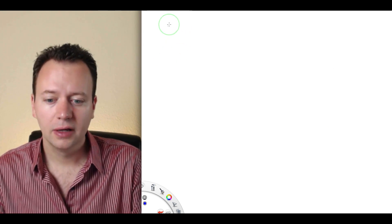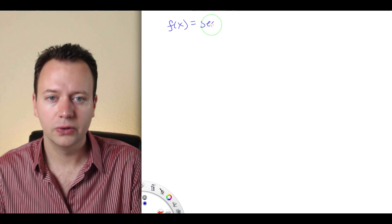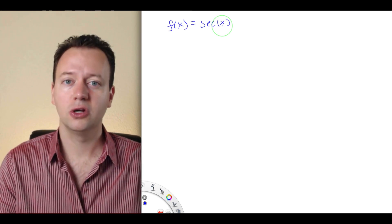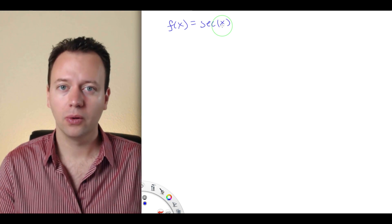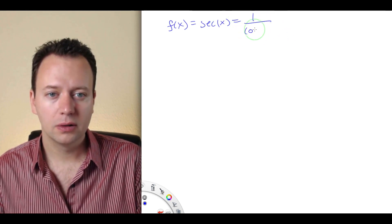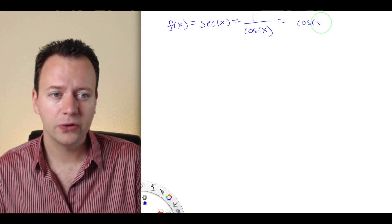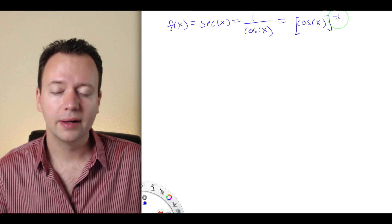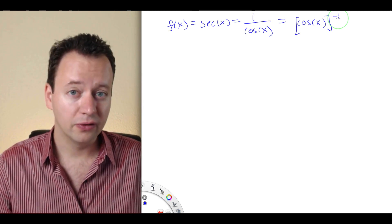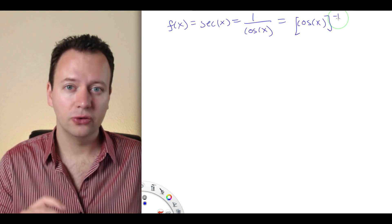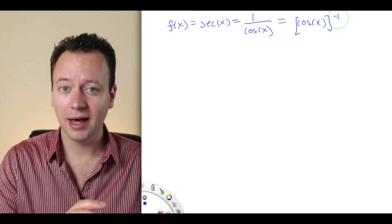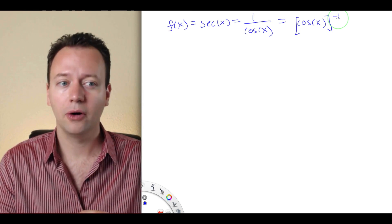Let's start with f of x equal to secant of x and compute a formula for its derivative. We already have all the tools we need. Recall that secant of x is 1 over cosine of x, which is cosine of x to the minus 1. So the first thing we're going to use is the power rule, because secant of x is cosine of x raised to the power of minus 1.